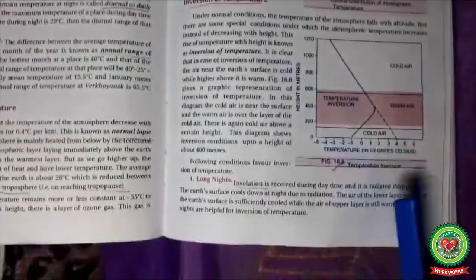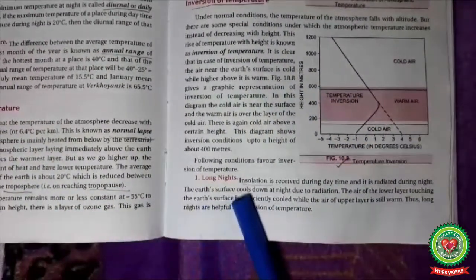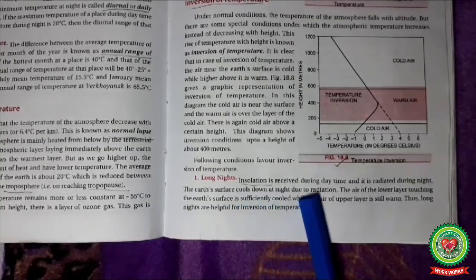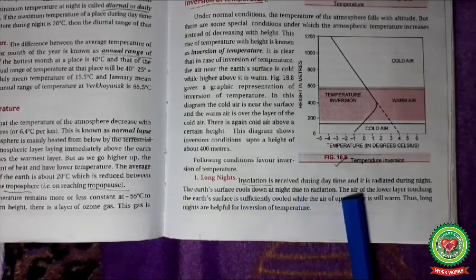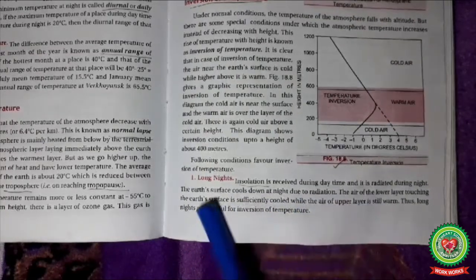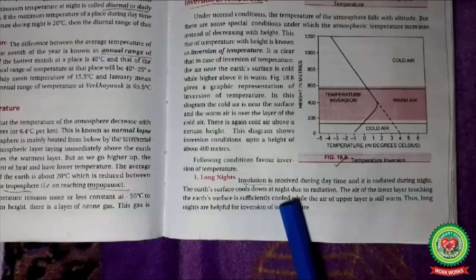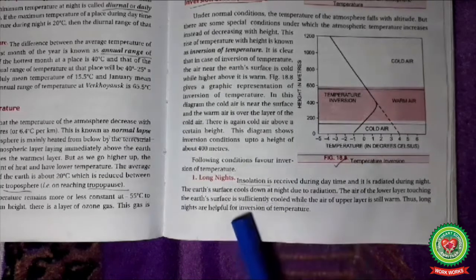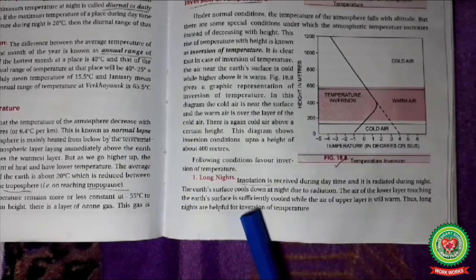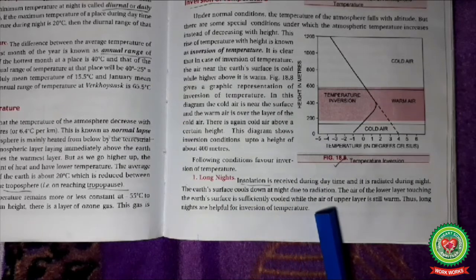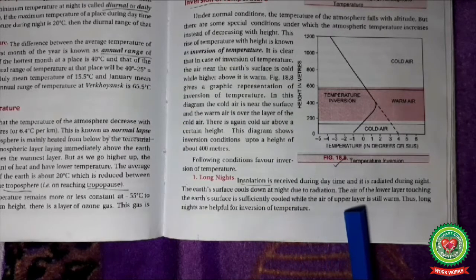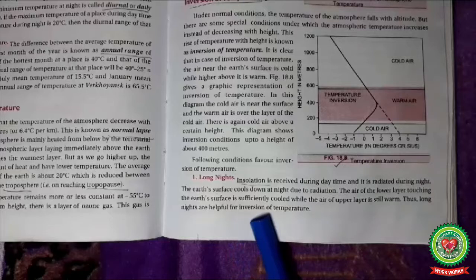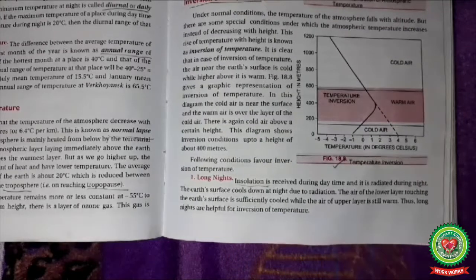Let us see the conditions for inversion of temperature. The first condition is long nights: insolation received by the Earth is lost at night. The Earth cools down at night due to radiation. The air of the lower layer touching the Earth's surface is sufficiently cooled while the upper layer is still warm. Long nights are therefore helpful for inversion of temperature.